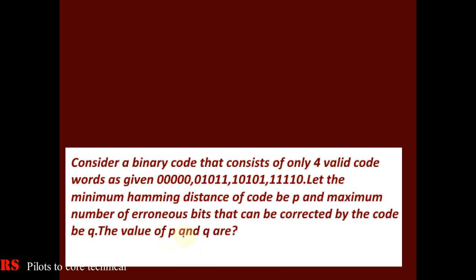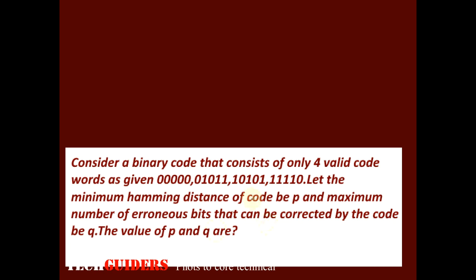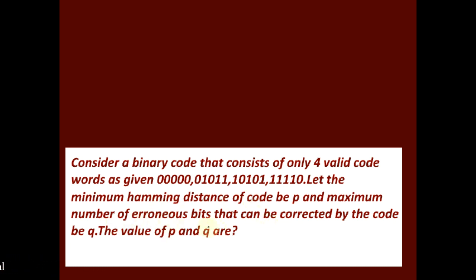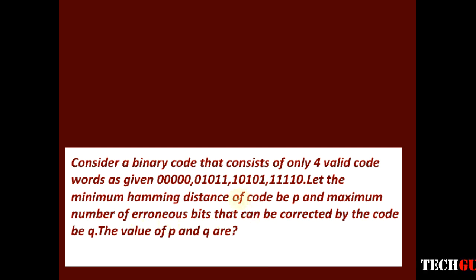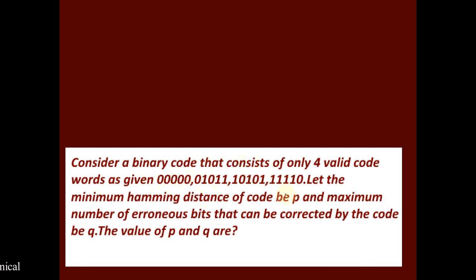We have to find out the values of P and Q, where P is the minimum Hamming distance of this code and Q is the maximum number of erroneous bits that can be corrected using this code. The maximum number of erroneous bits that can be corrected depends upon the minimum Hamming distance. So first, let's find out the minimum Hamming distance by computing it between each and every pair of codewords.